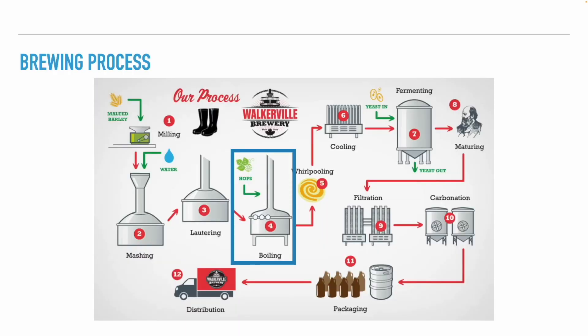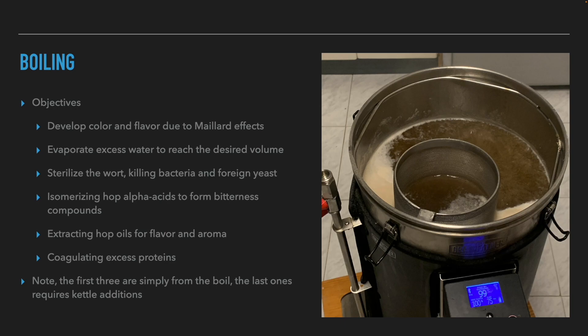After we have our wort, the next step is to boil it. The objectives of the boil are sixfold: to develop color and flavor through Maillard effects, to evaporate excess water, to reach the desired volume, to sterilize the wort by killing bacteria and wild yeast, to extract hop oils for flavor and aroma, and to coagulate excess proteins. Note that the first three happen simply from the boil, but the last three require kettle additions.